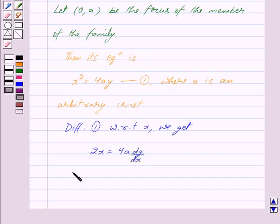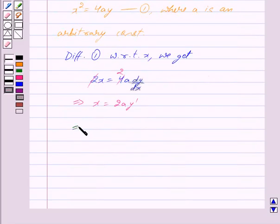This implies, cancelling out 2, we get x = 2a y'. And this implies x/(2y') = a.